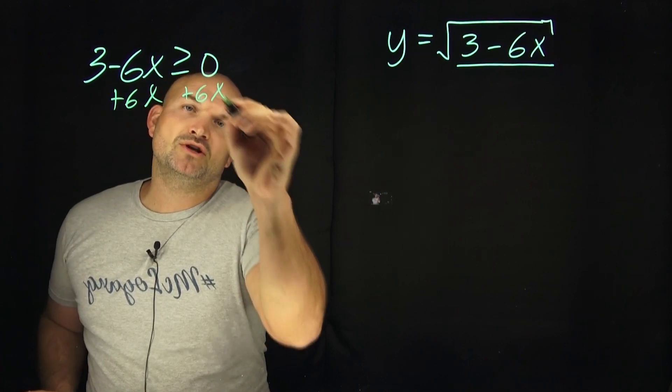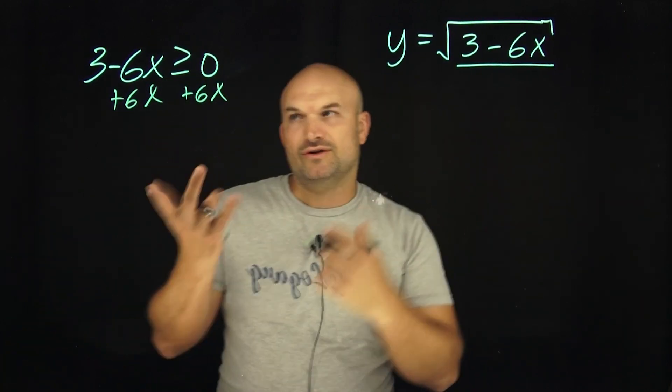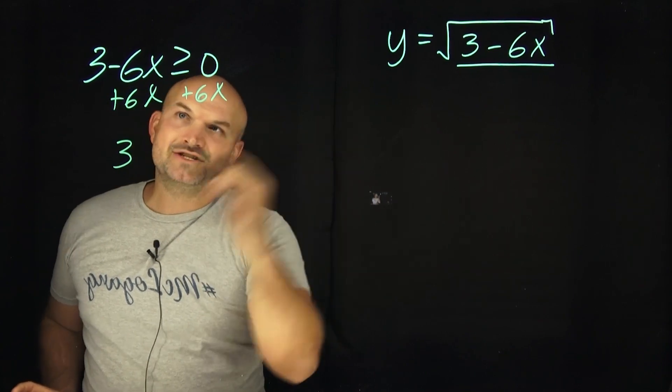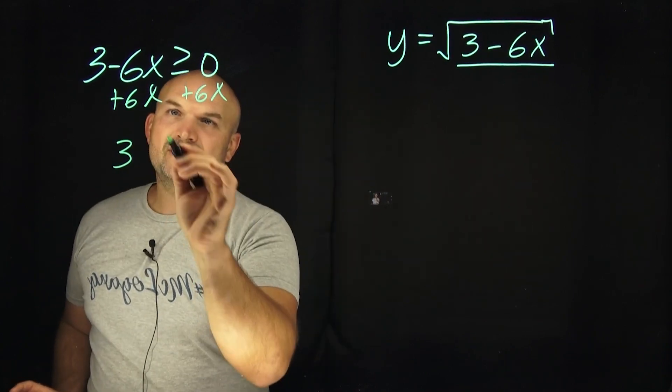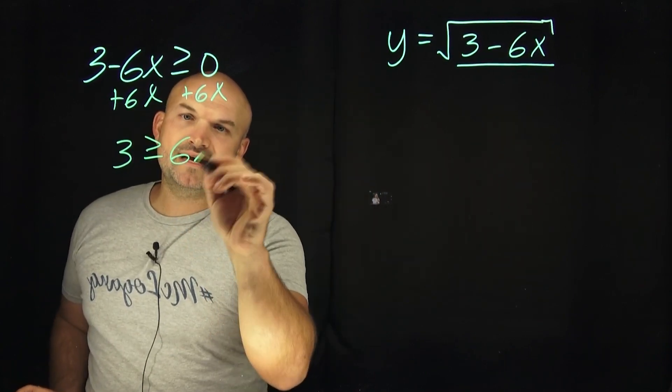If you're going to remember, multiply or divide by a negative, you got to go and flip the sign. A lot of times in this case, I just like to go ahead and get the x to the other side since it's equal to zero. So therefore, it's going to be 3 greater than or equal to 6x.